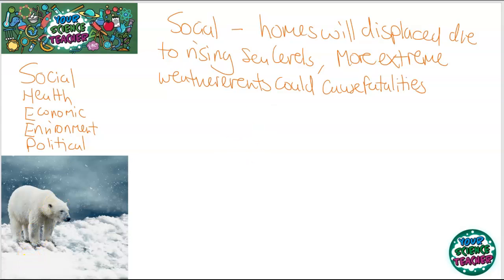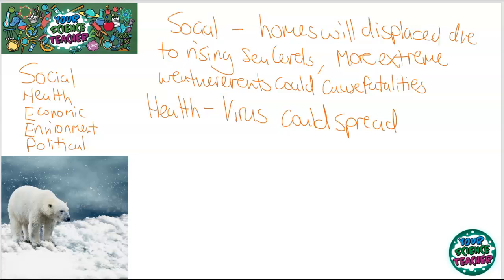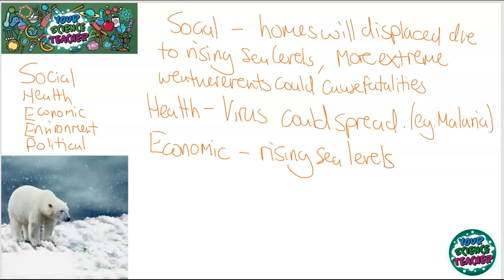There will also be many health impacts from global warming. Places which previously mosquitoes couldn't reach — carrying the malaria virus — may become habitable for mosquitoes, meaning viruses could spread faster. There will of course be massive economic problems due to rising sea levels, which could destroy some of the world's greatest economic powerhouses. Just think about New York, London, Rio de Janeiro — massive cities — where even a small rise in sea level could put them under massive threat.